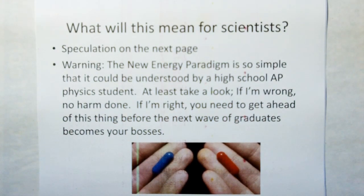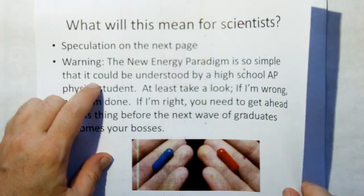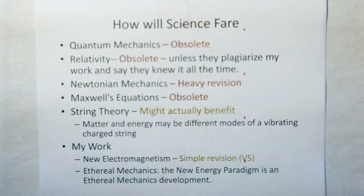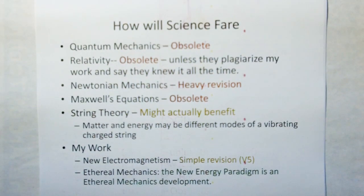If I'm right, you need to get ahead of this thing before the next wave of graduates become your bosses. How will science fare? Well, quantum mechanics is going to become obsolete overnight. We can't keep treating physical properties as arbitrary scalars that just make your equations work. Now we can understand what inertia comes from, what energy is, all this stuff, what matter is composed of. It may not be really what it is, but at least we get a model to help us get deeper into the rabbit hole.